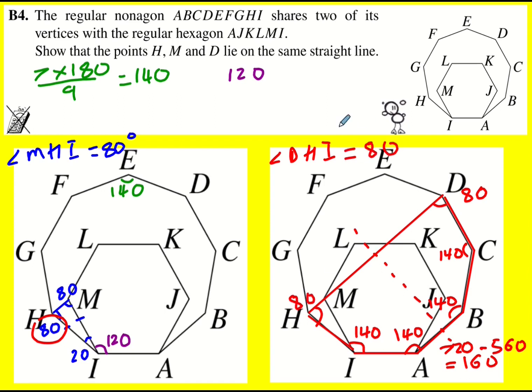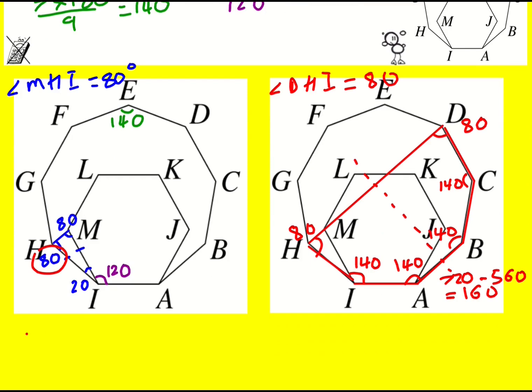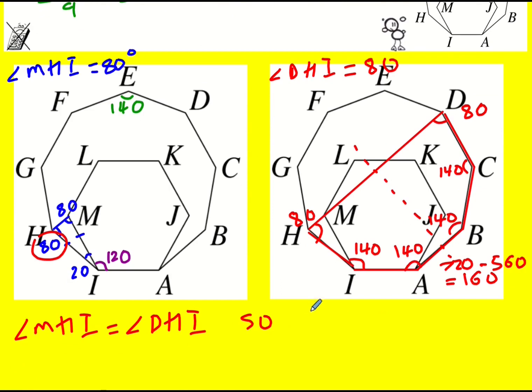And that is enough. Angle MHI equals angle DHI. So H, M, and D lie on a straight line.